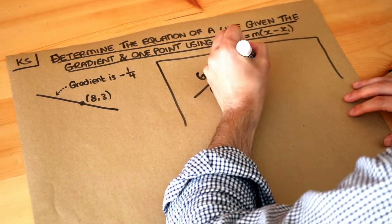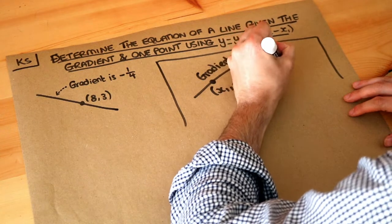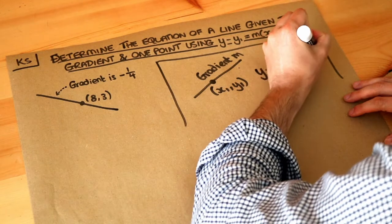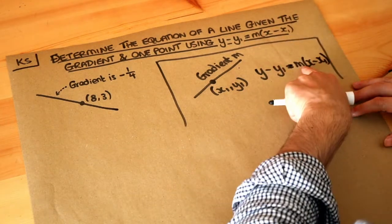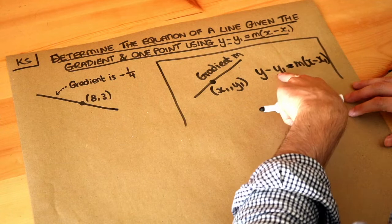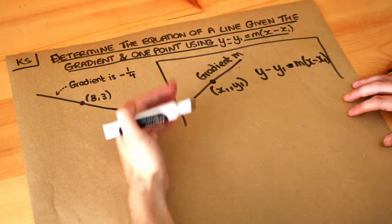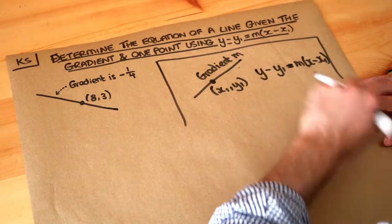So the m is the gradient, the x1, the y1 is this fixed point, and x and y are variables because when you have the equation of a straight line you'll have an x and a y in it, so those are the x and the y. How does it work?